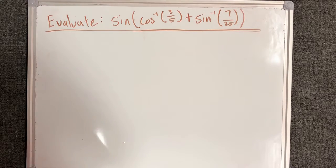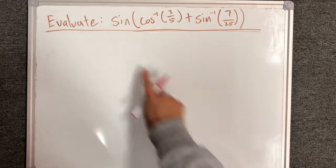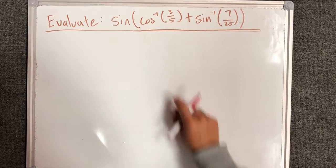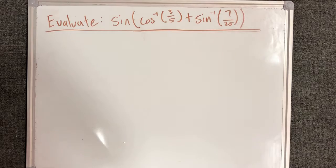Hello everybody, let's look at another example of the application of those formulas. So we have sine of cosine inverse of 3/5 plus sine inverse of 7 over 25.